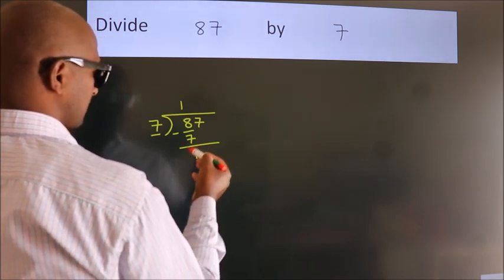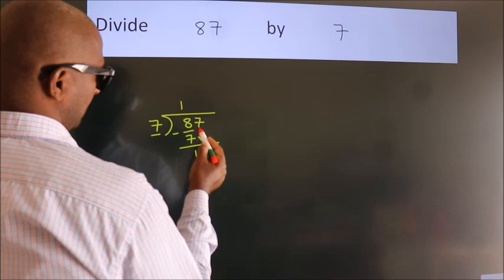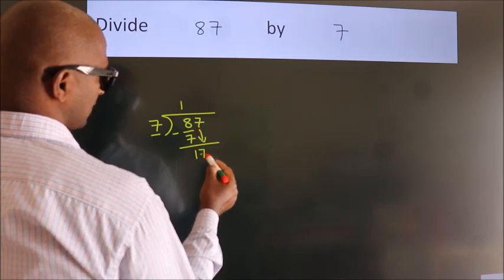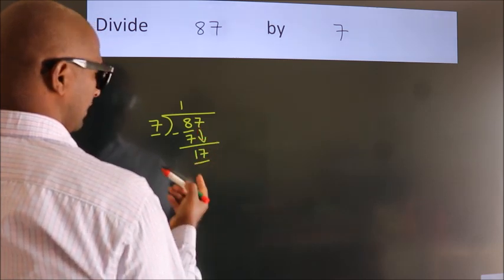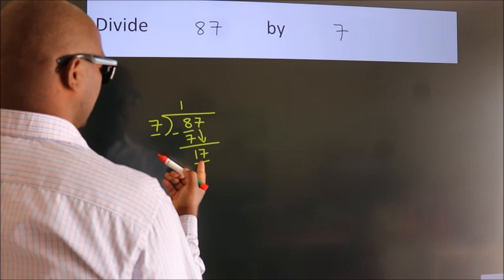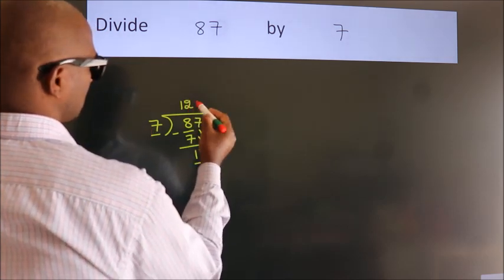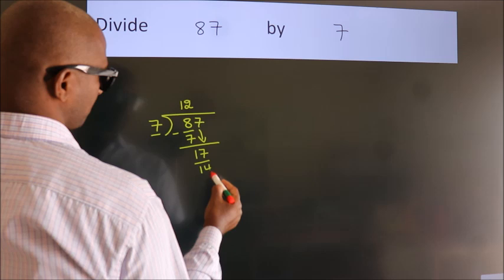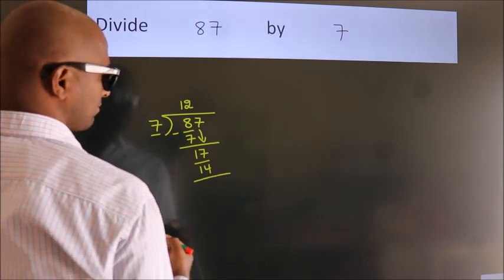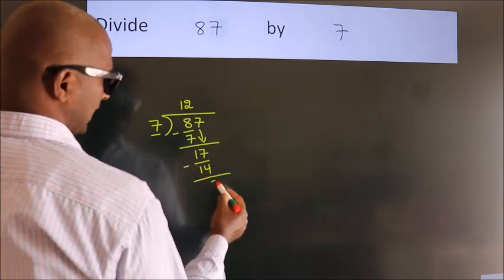After this, bring down the beside number. So 7 down. So 17. A number close to 17 in 7 table is 7 to 14. Now we subtract. We get 3.